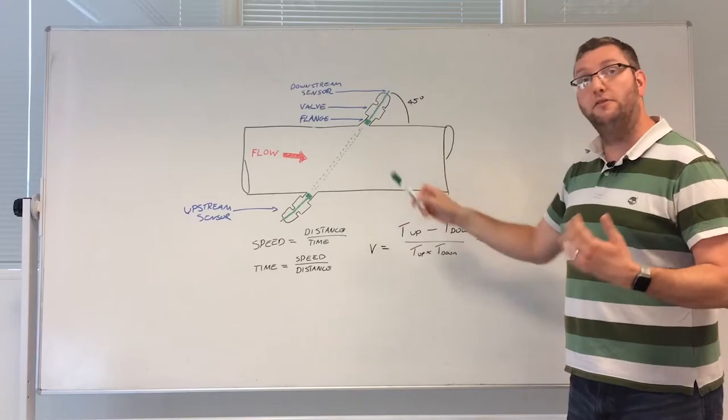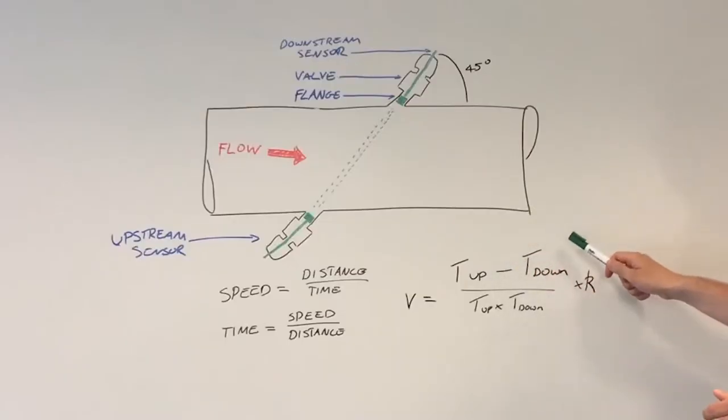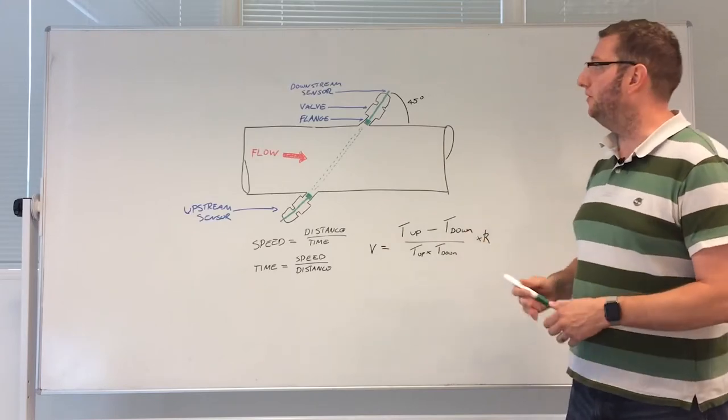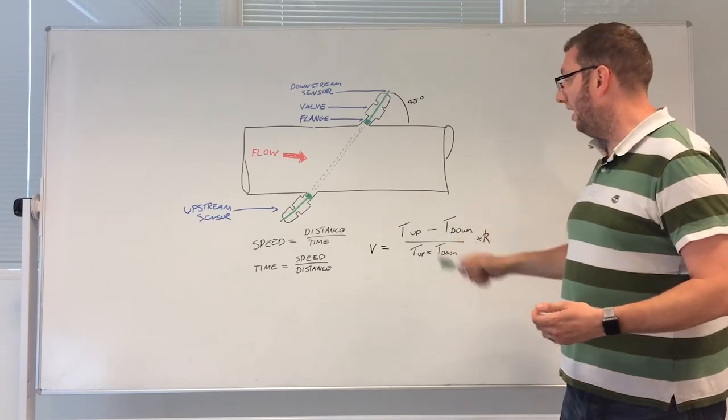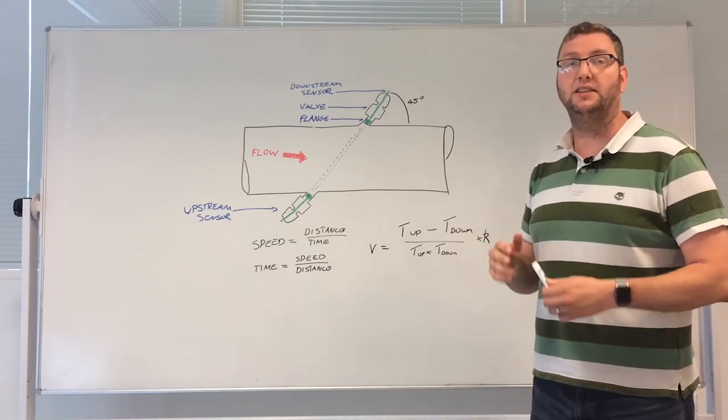To calculate the mean velocity in a pipe we then apply this equation, so the upstream time minus the downstream time divided by the two multiplied together, and we put in here a little k factor, a correction factor, and that accounts for a number of different effects including the angle of the transducers. We apply this equation and we can work out the mean velocity of gas in the pipe.